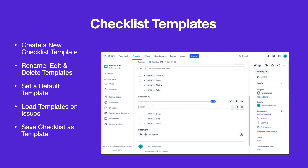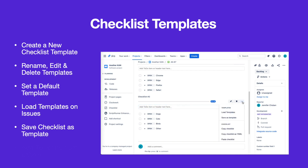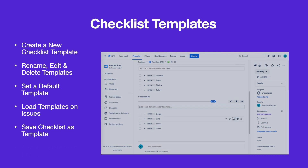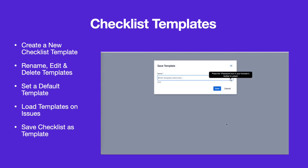If you have a checklist on an issue that you want to save as a template, simply click on the More menu and select Save as Template. Name the template and click Save.